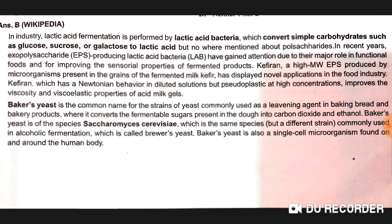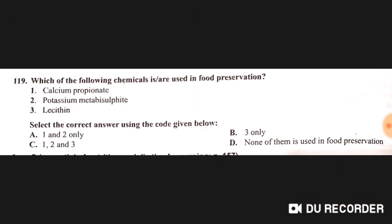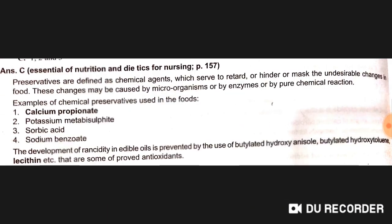Chemicals used for food preservation include calcium propionate, potassium metabisulfite, and lecithin — all three are correct, option C is right.